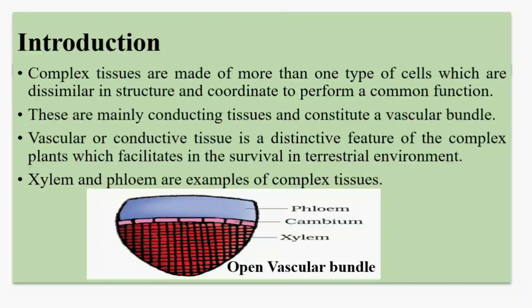A vascular bundle is the arrangement between phloem and xylem, and phloem and xylem are examples of complex permanent tissue. In a vascular bundle there are two types: open vascular bundle and closed vascular bundle. In an open vascular bundle, cambium is present between phloem and xylem, whereas in a closed vascular bundle cambium is absent. Xylem conducts water and minerals; phloem conducts organic food synthesized by photosynthesis.